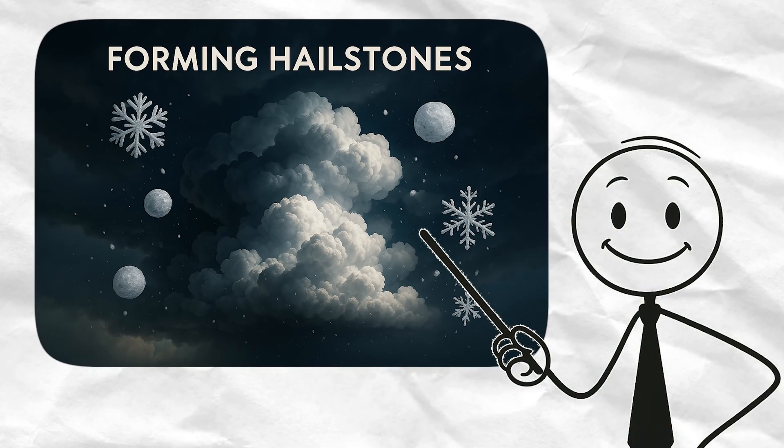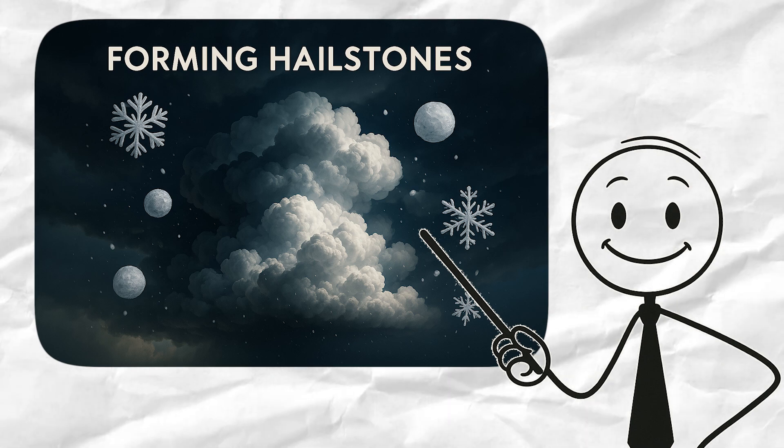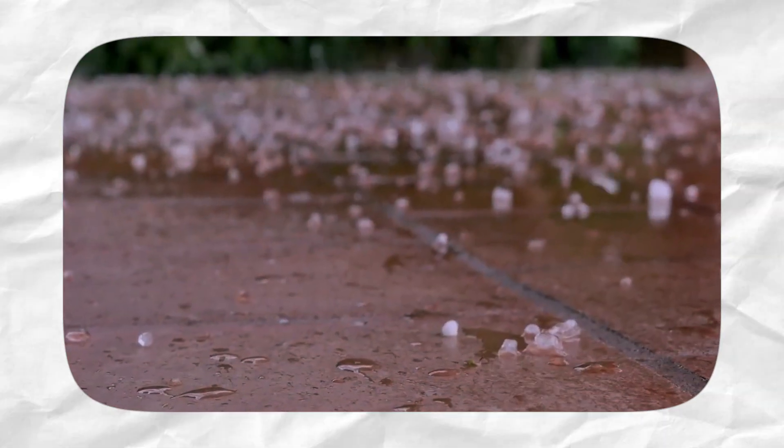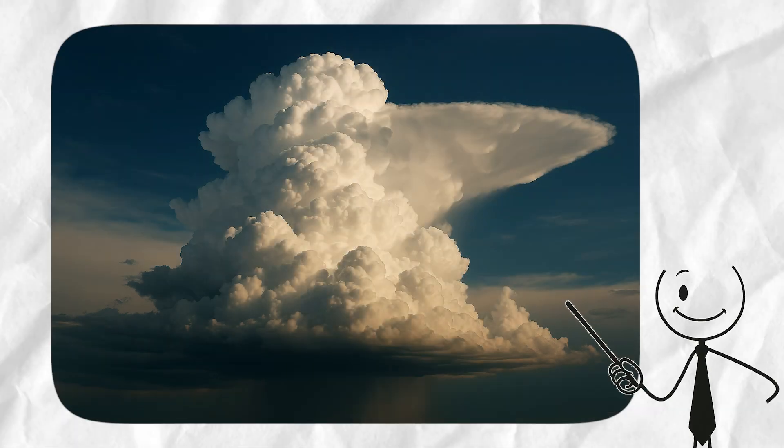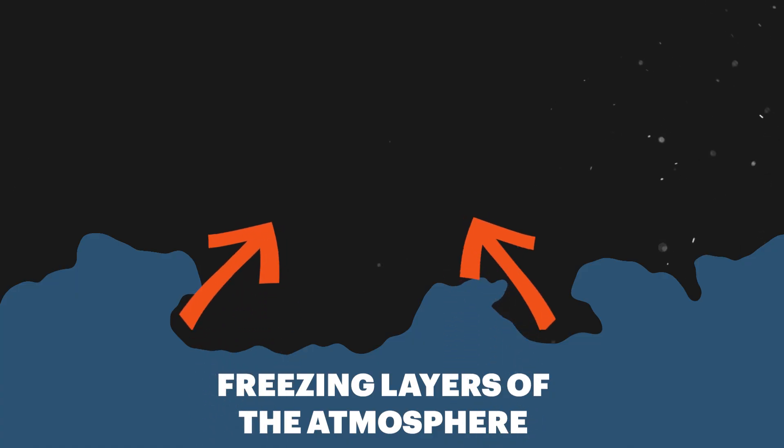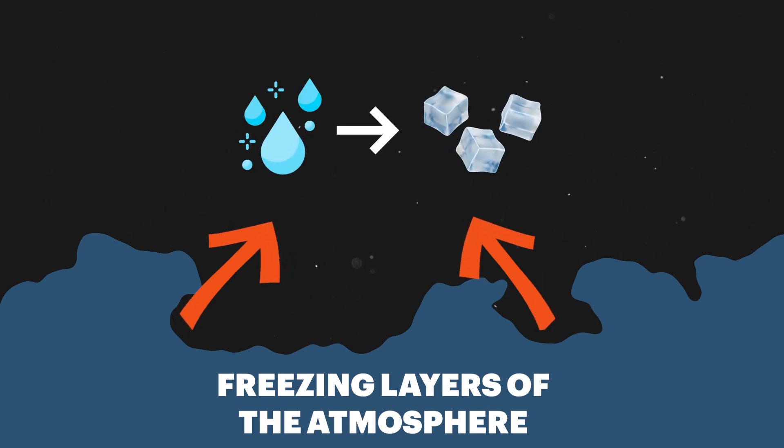Next, we have hailstones. Now, hail is wild. It's not the same as snow or sleet. It forms in a very specific place. Cumulonimbus clouds. These clouds have intense updrafts. Basically, winds strong enough to carry water droplets upward into freezing layers of the atmosphere.